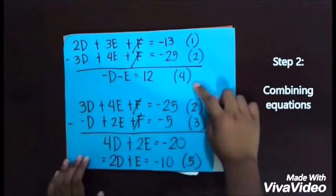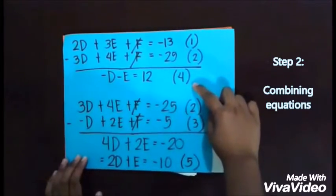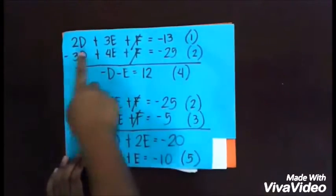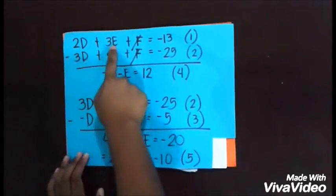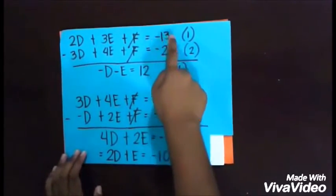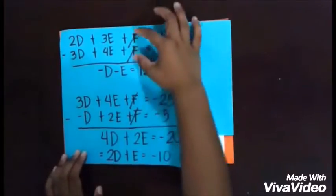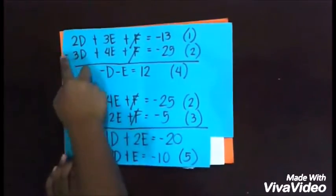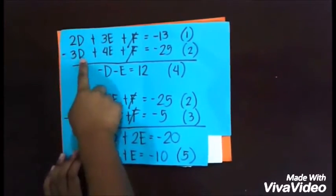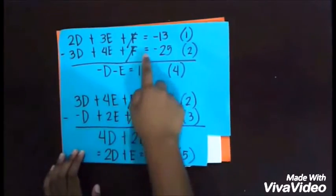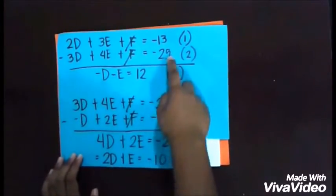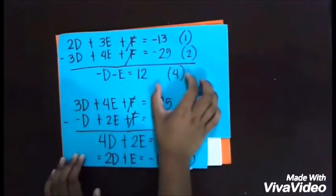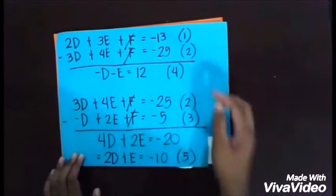Next, to obtain Equation 4, combine Equation 1 and Equation 2. Subtract: (2d + 3e + f = -13) minus (3d + 4e + f = -25). The f terms cancel, giving -d - e = 12. This is Equation 4.